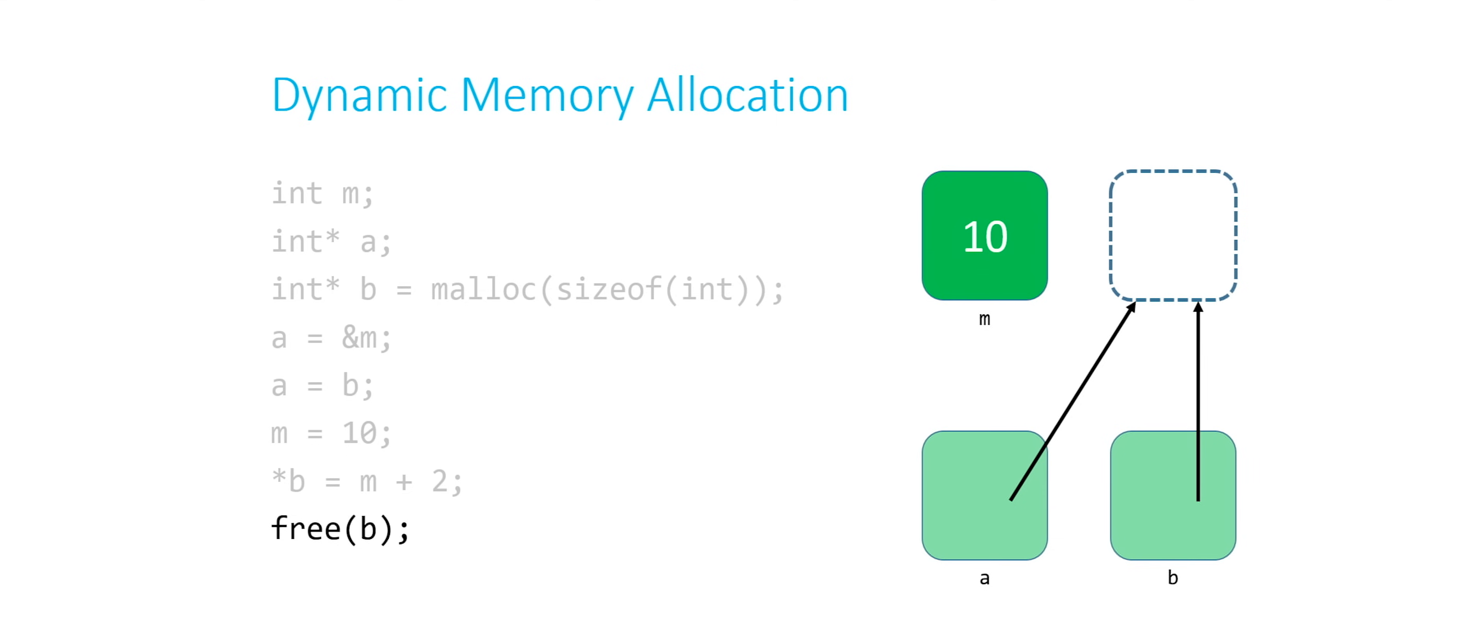A and b still point to where it used to be, but I no longer have access to it. If I try and touch it, the system might get upset with me. So for example, if I try and say this, star a equals 11, what's going to happen? Unpredictable behavior, right?